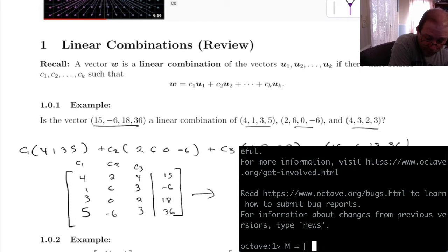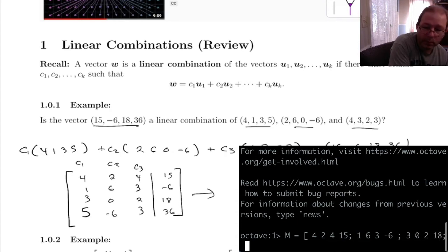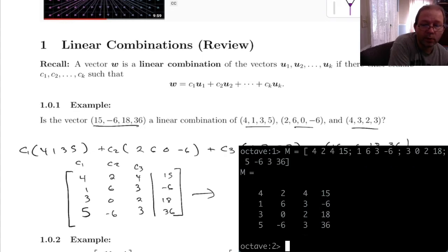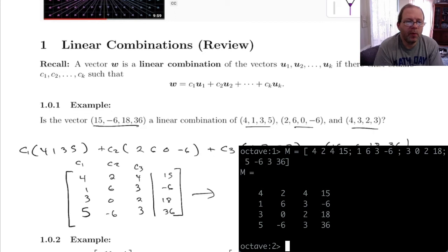Let's see. We've got 4, 2, 4, 15. Then 1, 6, 3, -6. Then 3, 0, 2, 18. And then 5, -6, 3, 36. Alright, so that should match my matrix I've got written there. I'm just going to double check it. Okay, now, before we row-reduce it, what are we looking for?